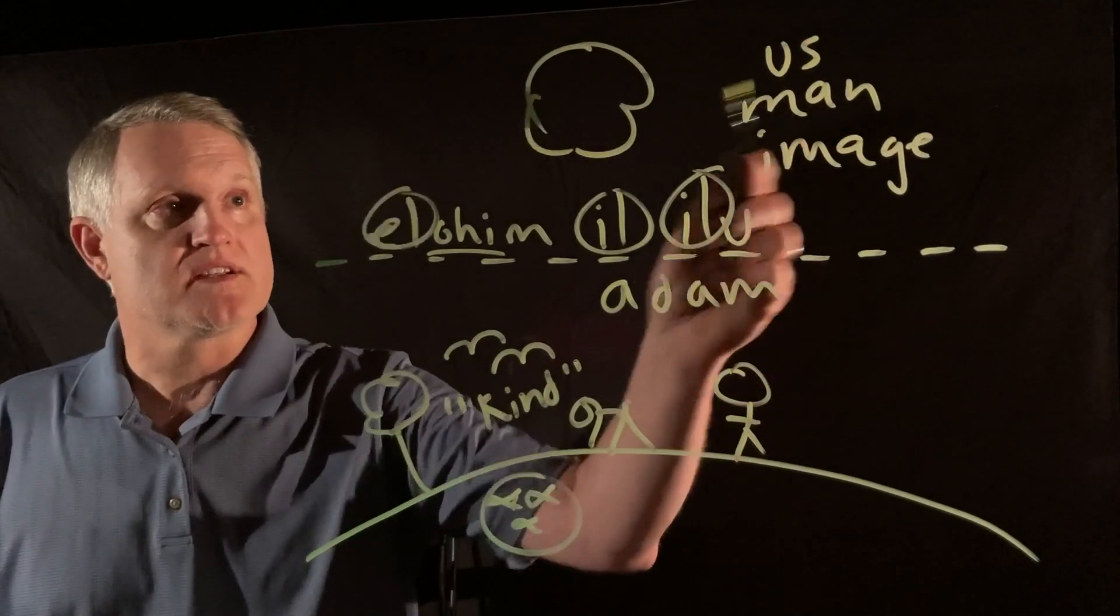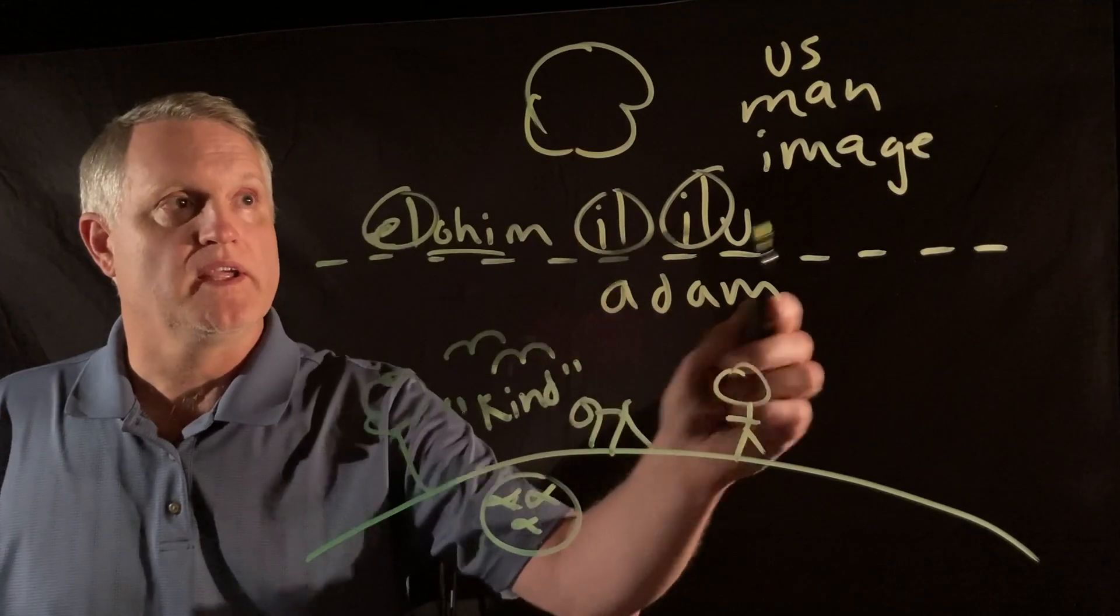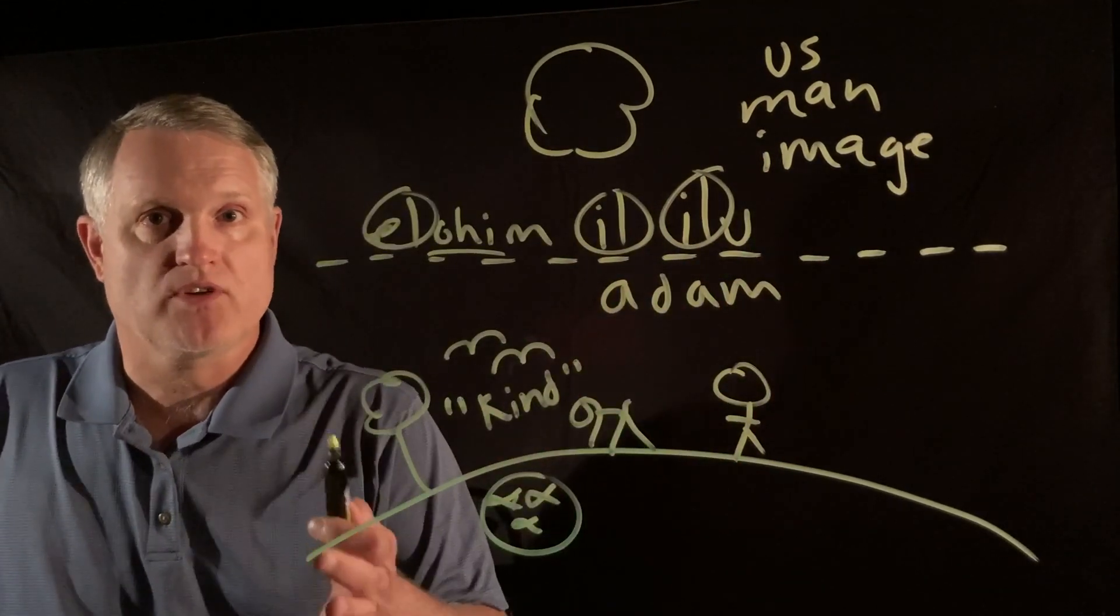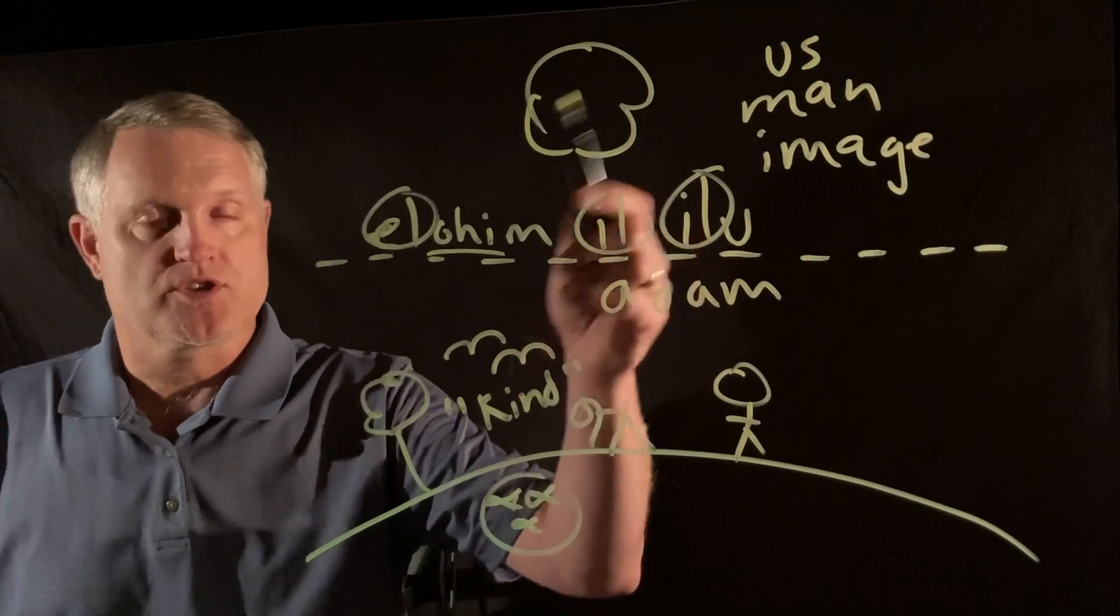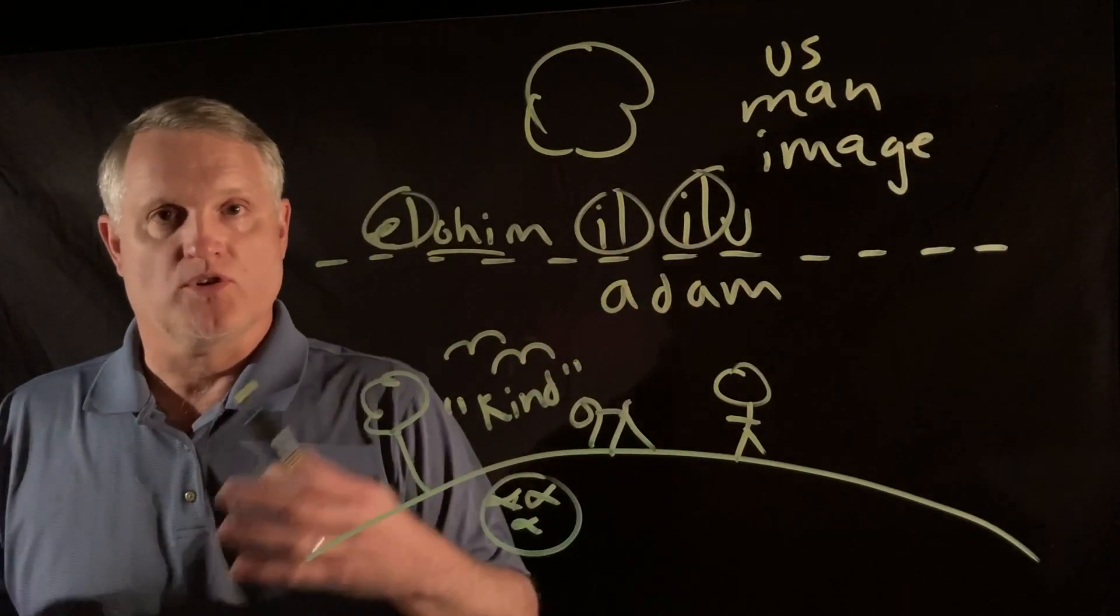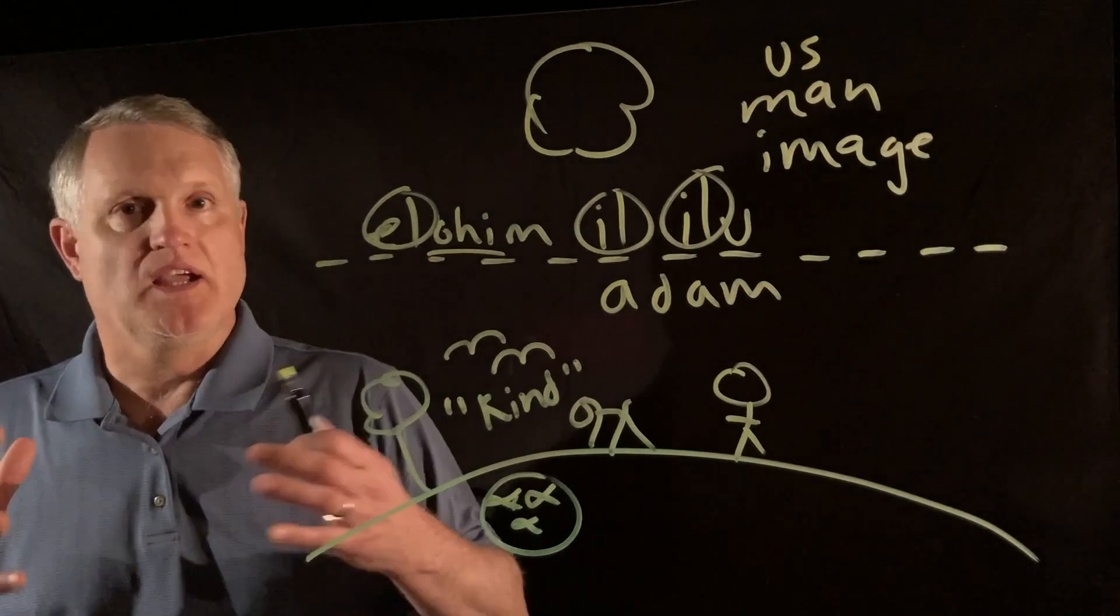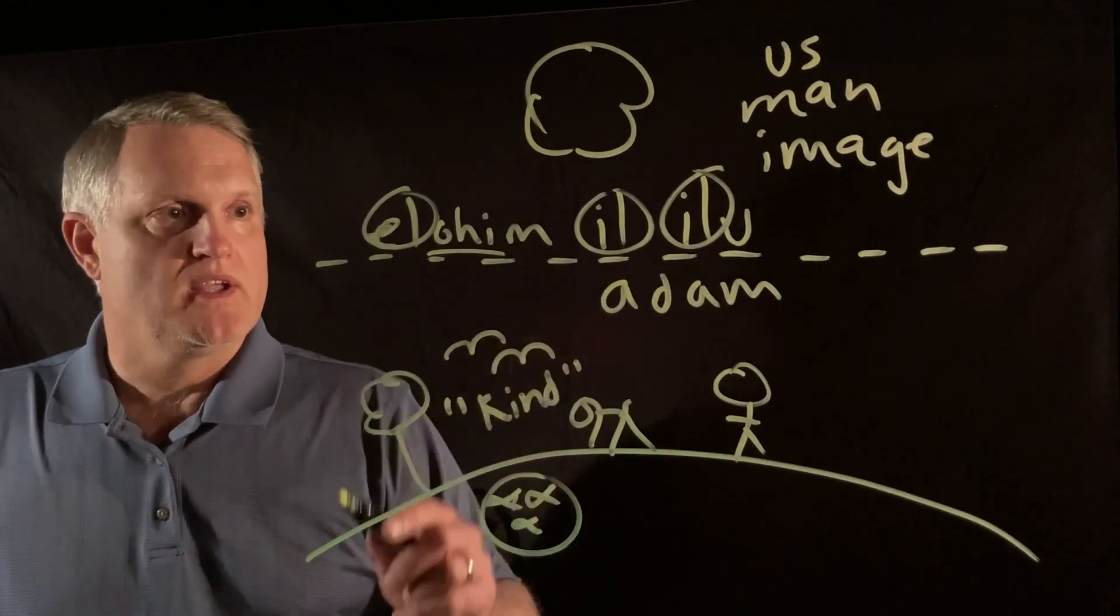let us, and he's saying this to apparently other spirits that he had created. We'll have to learn about those later apparently. But he says like a king, again, to his court, making a command, you know, to go to war or something like that. This king says to his other created Elohim,